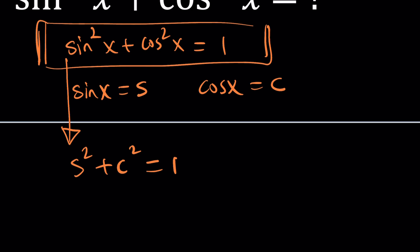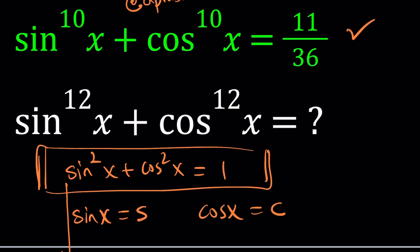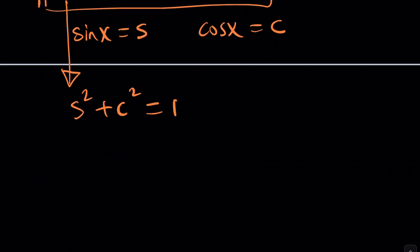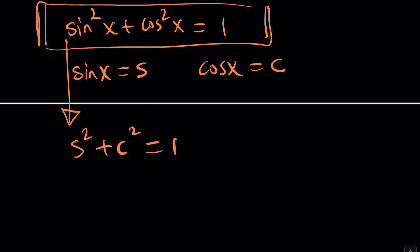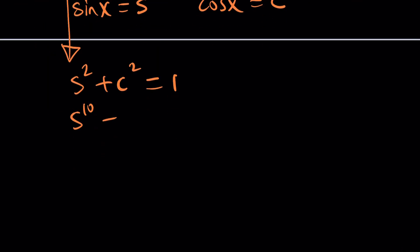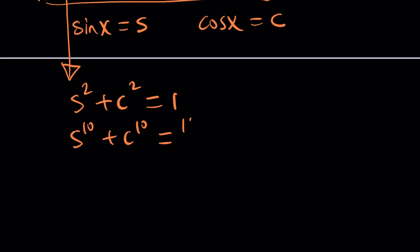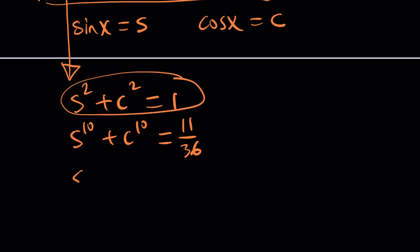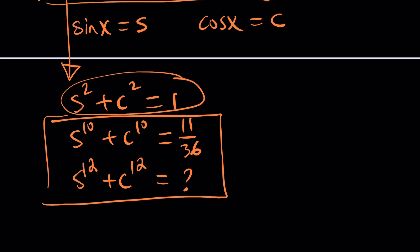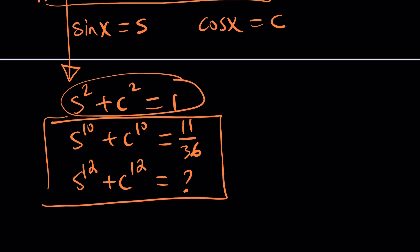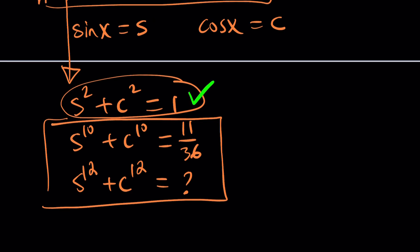This problem can be stated in a much simpler way after this naming. We can safely say that s to the tenth power plus c to the tenth power equals 11 over 36 — this is given. And we know that s squared plus c squared equals 1 — that we should know. We are supposed to find s to the twelfth power plus c to the twelfth power.